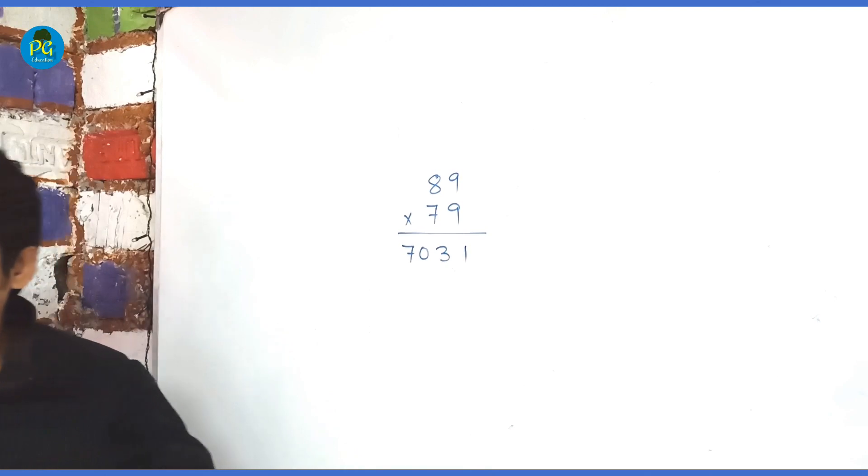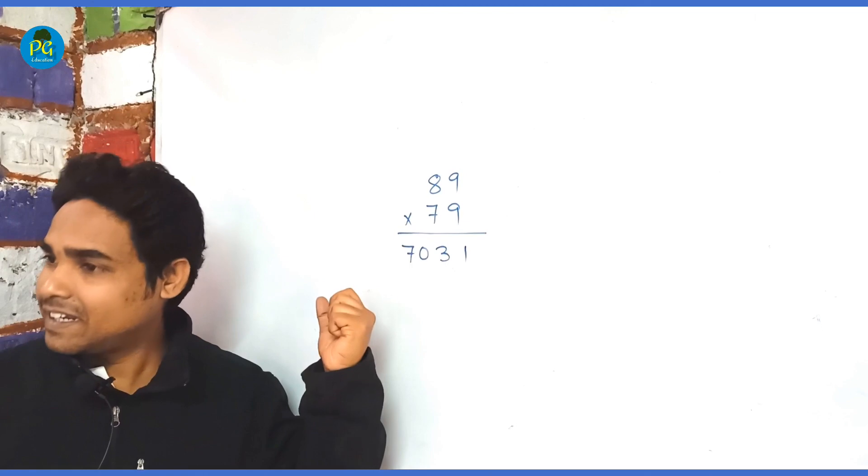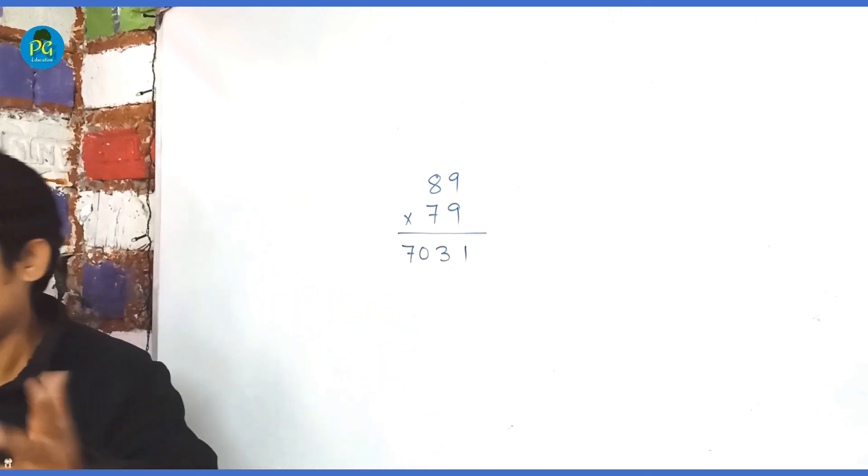Now the question is, if you can do it correctly, then how you can do it in a single line? What is the rule?